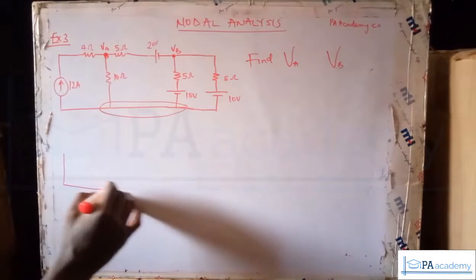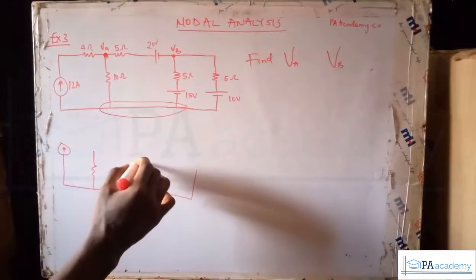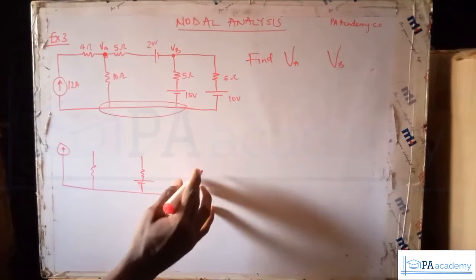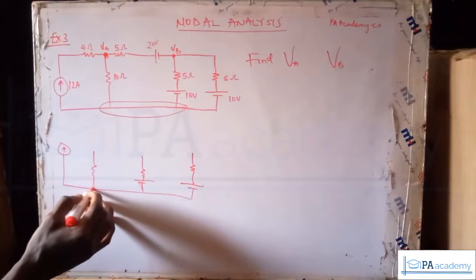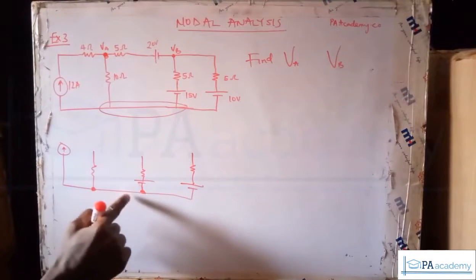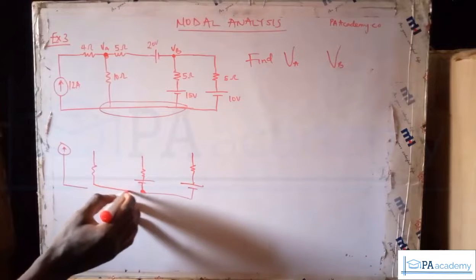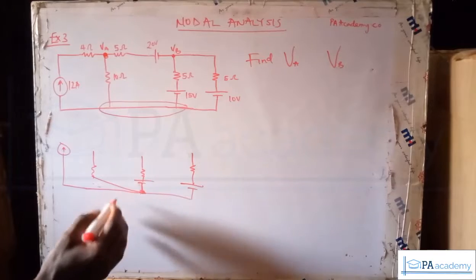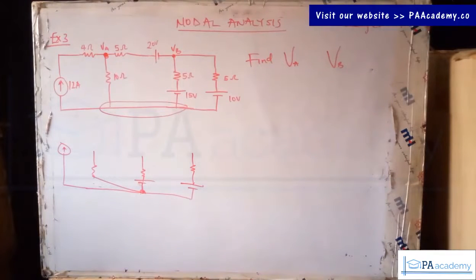Don't make the mistake of calling separate points along the bottom wire different nodes. Let me just redraw the lower parts of the diagram to make this clear. There's nothing in between here — it's just like having everything meeting at one single point. So don't make that mistake; look at it closely.